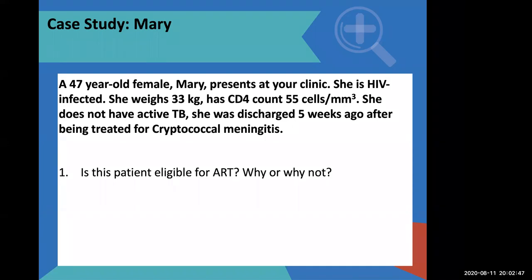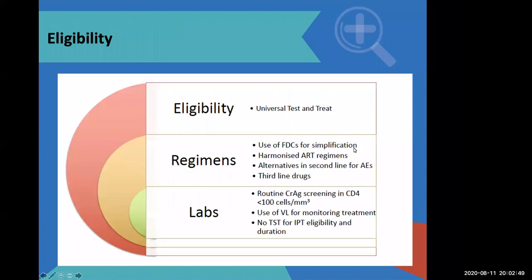So let's look at what the South African eligibility criteria say. Eligibility criteria in South Africa has been reduced to one sentence, which is universal test and treat. What this means is that every patient who is tested for HIV and tests positive — by virtue of testing positive, you are therefore eligible for ARVs.